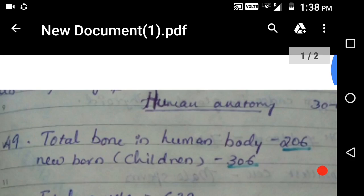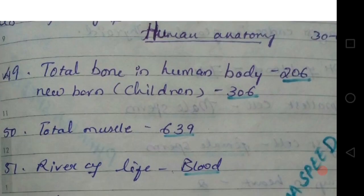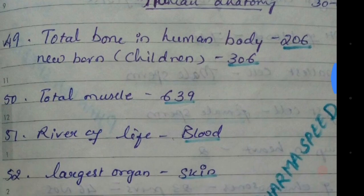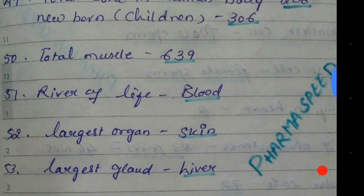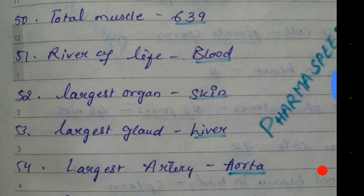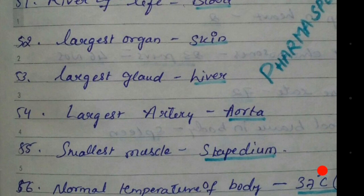Now let's repeat: total bones in the human body — 206. Total bones in a newborn — 306. Total muscles in our body — 639. River of life — blood. Largest organ — skin. Largest gland — liver.